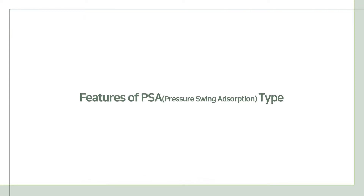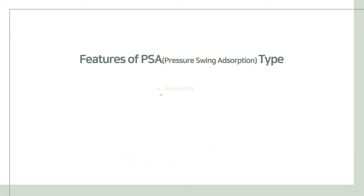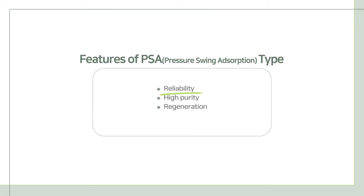The PSA type nitrogen generator ensures the reliability of analysis results by providing high purity nitrogen. Also, the regeneration system enables the semi-permanent use of the nitrogen generator.